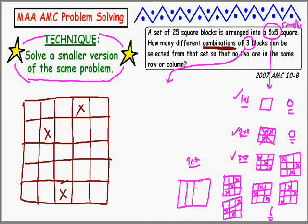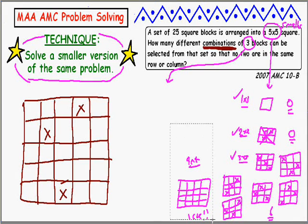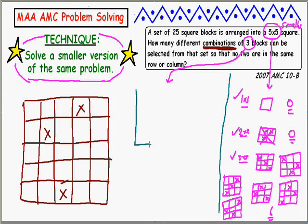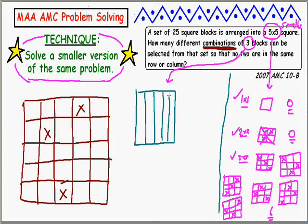Now the 4 by 4. Oh dear - that seems hard. I'm giving up on doing the smaller-grid version. I'll try instead the other smaller version: go back to the 5 by 5 grid and instead of choosing three blocks, ask how many ways are there to choose just one?